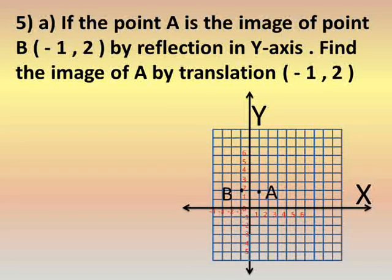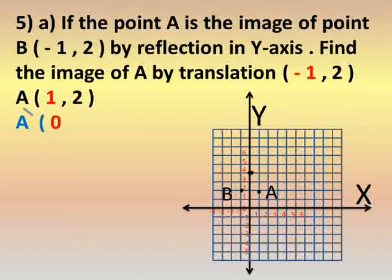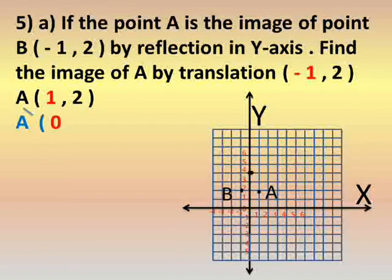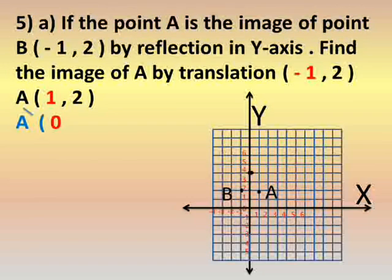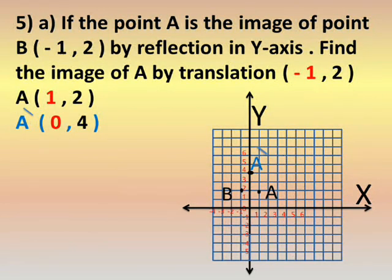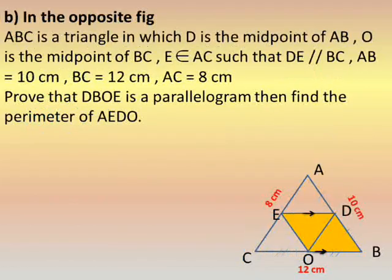Point B is on the left-hand side of the y-axis, 1 unit away. By reflection in the y-axis, A is 1 unit on the right-hand side. So A has coordinates (1, 2). Now find the image of A by translation (negative 1, 2): x becomes 1 plus negative 1 equals 0, y becomes 2 plus 2 equals 4. So the image A' is at (0, 4).